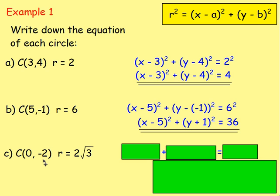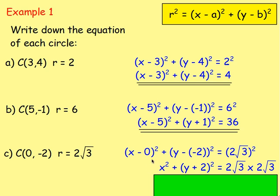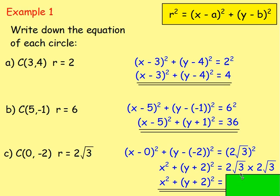Next one: centre 0, negative 2, radius 2 root 3. Writing it in that form: x minus 0, all squared, plus y take away negative 2, all squared, equals 2 root 3, all squared. Tidying up: x minus 0 is just x squared. y take away negative 2 becomes y plus 2, all squared. Squaring 2 root 3 — that's 2 root 3 times 2 root 3 — multiply the whole numbers: 2 times 2 is 4, root 3 times root 3 is 3, so 4 times 3 gives you 12. The equation is x squared plus y plus 2, all squared, equals 12.